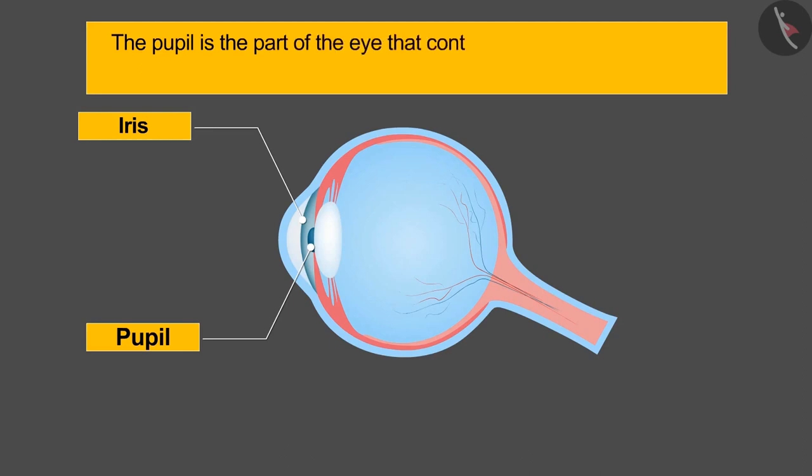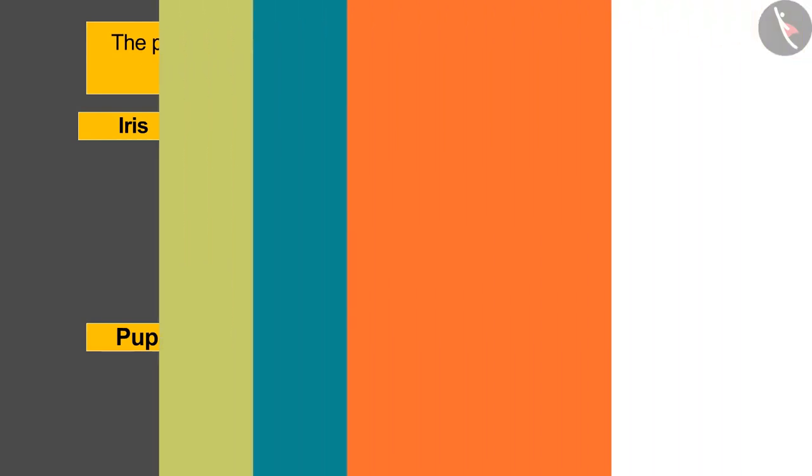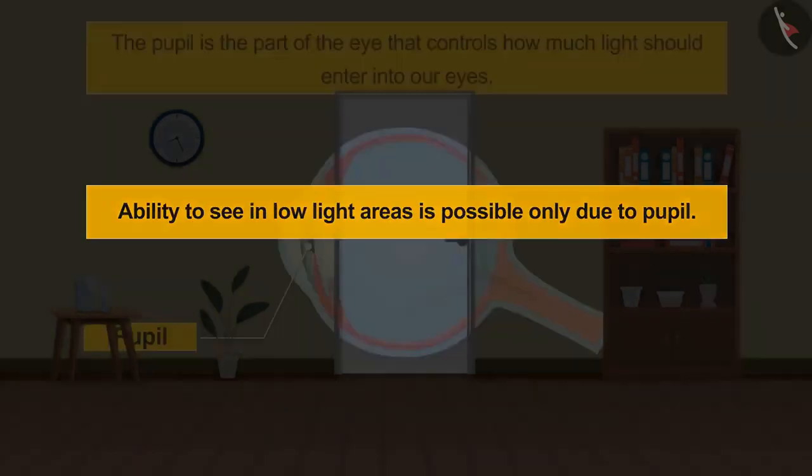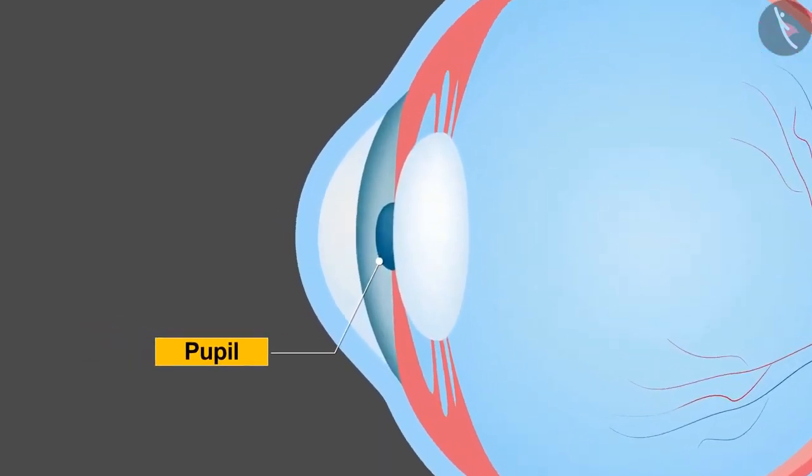The pupil is the part of the eye that controls how much light should enter into our eyes. When we enter a dark room or a room with low light, for some time we do not see anything, then slowly everything starts to appear. Ability to see in low light areas is possible only due to pupil. It actually expands and allows more light to enter into the eyes.